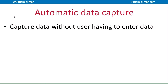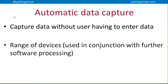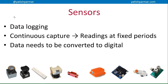Automatic data capture is basically capturing data without the user having to enter it manually. There is a range of devices that can be used to do that, obviously in conjunction with further software processing. So you have data logging, where sensors are connected to a system. Sensors basically continuously capture data — they don't stop. What happens is that you read the data at fixed intervals.